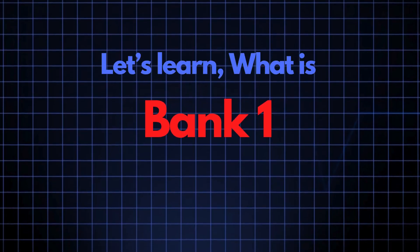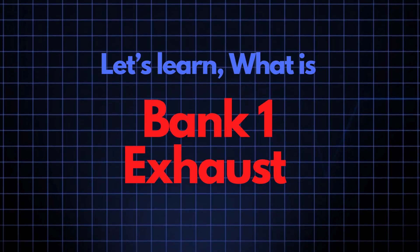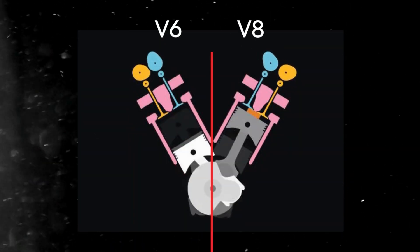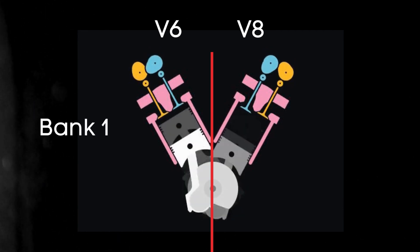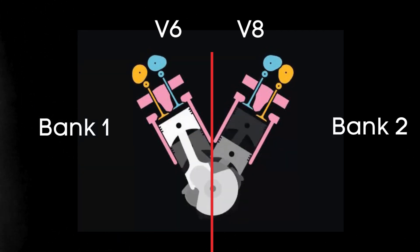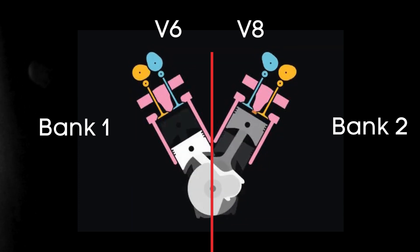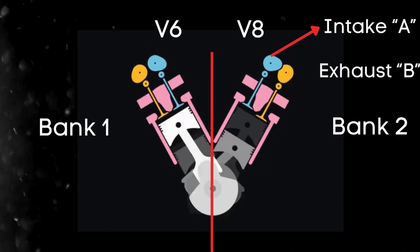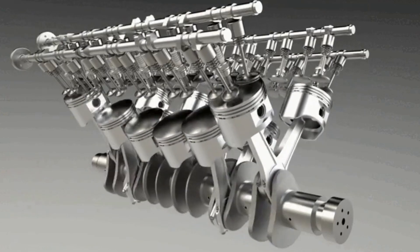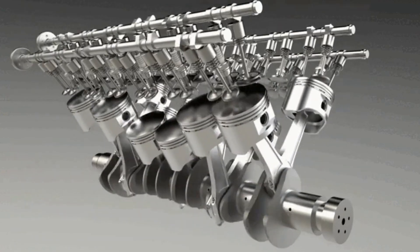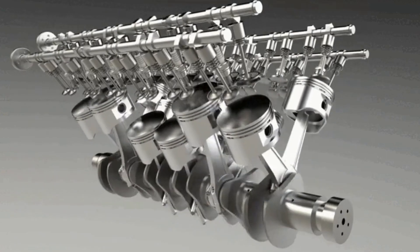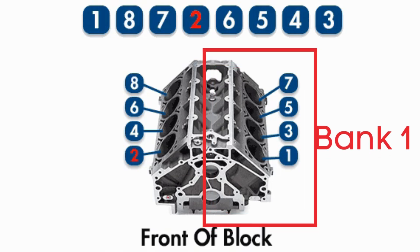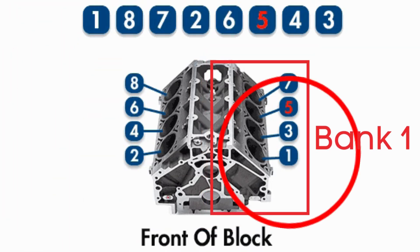Now, let's learn what bank 1 exhaust camshaft is. In the case of V6 or V8 engines, there are two camshafts: bank 1 and bank 2. For dual overhead camshaft, DOHC engines, there are two camshafts per bank — intake and exhaust. The exhaust camshaft controls the opening and closing of the exhaust valves. Bank 1 typically refers to the side of the engine where cylinder 1 is located.